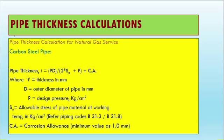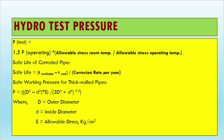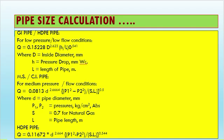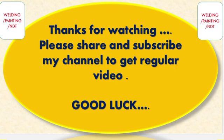To summarize, this video has covered: pipe thickness calculation with an example, burst pressure formula, hydrotest pressure formula, safe life of corroded pipes, safe working pressure for equal-wall pipes, HDPE pipe thickness, and pipe size calculation for GI and HDPE pipes. All these formulas are needed both at site and in engineering design. If you have any questions, please leave a comment. Thanks for watching — please share and subscribe for regular videos.